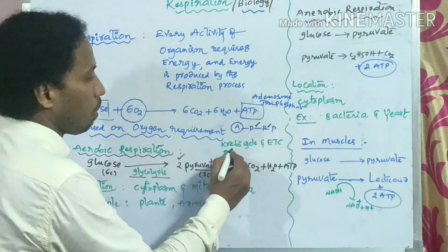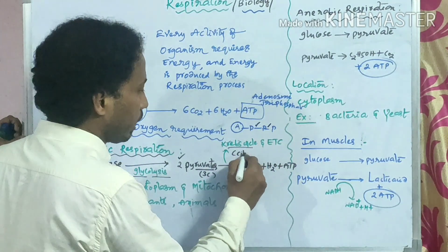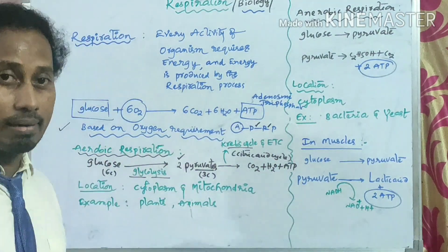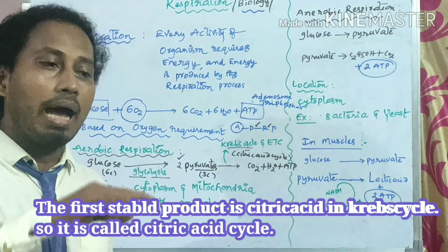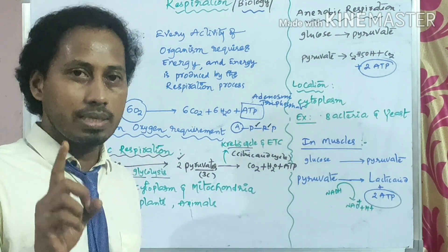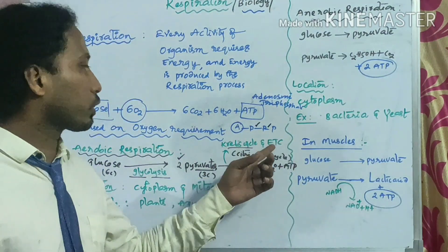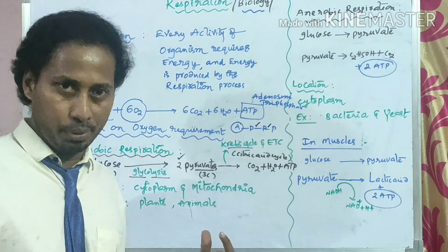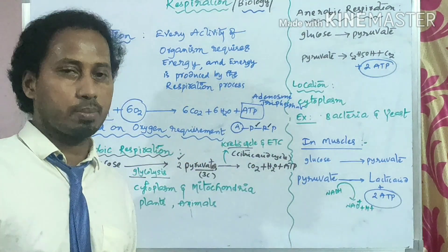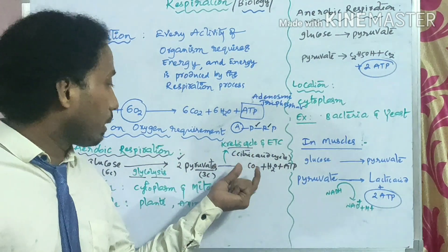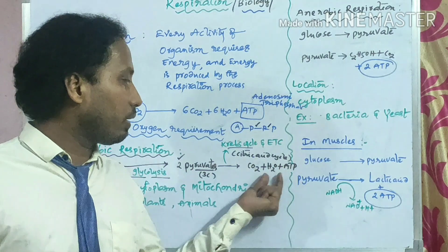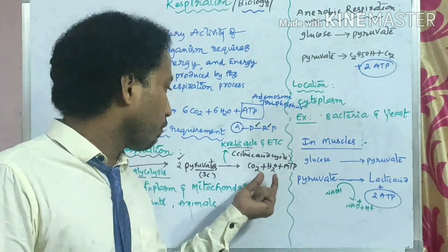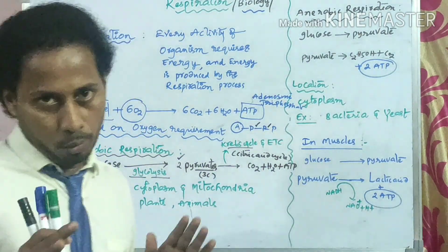The Krebs cycle is also called the citric acid cycle because the first substrate produced is citric acid, and the cycle continues with citric acid. Then comes the electron transport chain, where NADH and FADH2 produced earlier are involved. This leads to the byproducts CO2, H2O, and ATP. The complete oxidation of glucose follows this full cycle. This is all about aerobic respiration.